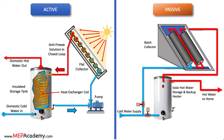Most solar water heaters require a properly insulated storage tank. These tanks typically feature an extra outlet and inlet that are linked to the collector. In two-tank configurations, the solar water heater heats the water in advance of it entering the standard water heater. Conversely, in one-tank setups, the backup heater is integrated with the solar storage within a single tank.